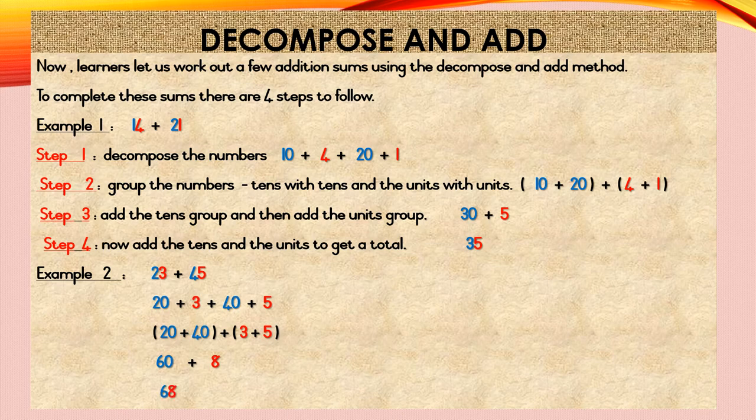Step 4: Now add the tens and the units to get a total. Your tens is 60 and your units is 8, so 60 plus 8 is equal to 68. Your answer in step 4 is 68.